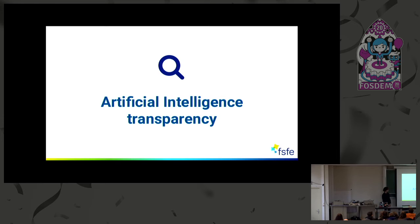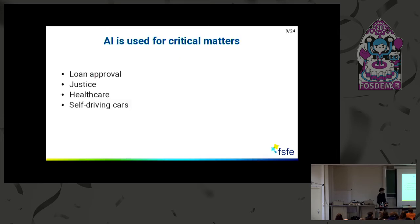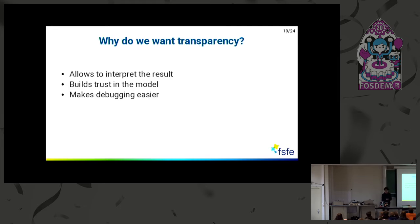The second part of my talk is about transparency in artificial intelligence. We have to realize that artificial intelligence is not only used for classifying dogs and cats, but also for important tasks like loan approval, justice, our healthcare system, or self-driving cars. This makes transparency necessary, because it allows you to interpret the results — making sure that the model is picking up the right things in the input to do the classification or prediction — and so it allows you to trust the model and debug it more easily.